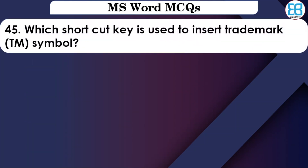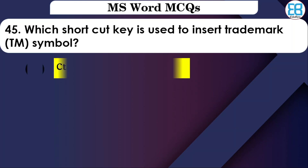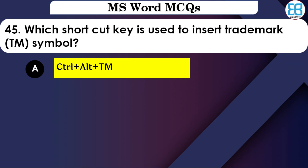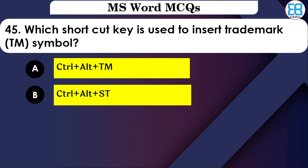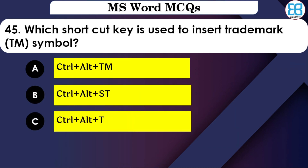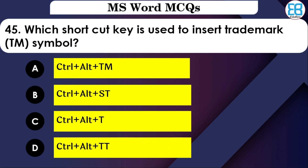What is the shortcut key to insert a trademark symbol in MS Word? The correct option is Ctrl+Alt+T — use Ctrl+Alt+T to insert the trademark symbol.